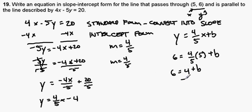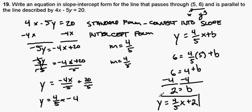To solve for b, simply subtract 4 from both sides of the equation, and I wind up with b being equal to 2. So the equation of our line that is parallel to the original line and passes through the point 5 comma 6 would be y is equal to 4 fifths x plus 2. And we are done.